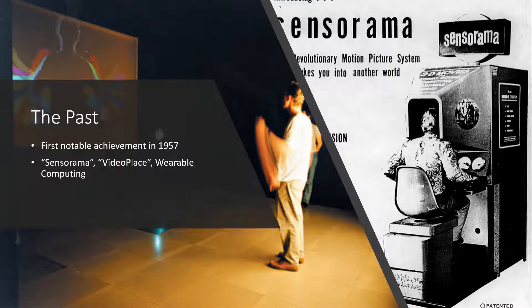Augmented reality was first achieved by a cinematographer called Morton Heilig in 1957. He invented the Sensorama, which delivered visuals, sounds, vibration, and smell to the viewer. Then in 1968, Ivan Sutherland invented the head-mounted display as a kind of window into a virtual world. In 1975, Myron Kruger developed the first virtual reality interface in the form of Videoplace, which allowed users to manipulate and interact with virtual objects in real-time.